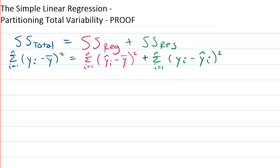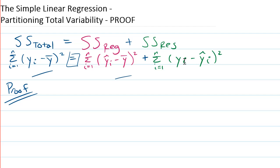In the previous video, we talked about the intuition for why the total variability can be broken down into the variability explained by the model plus the unexplained variability. That's called the partitioning of total variability. The sum of squares total equals the sum of squares from the regression plus the sum of squares from the residual. In this video, we want to show the proof of this equation.